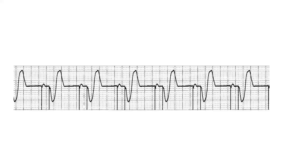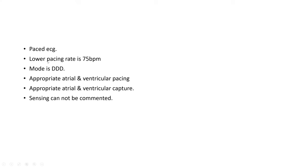This next ECG shows two pacing spikes. Importantly, the P is always there with the QRS — P with QRS, P with QRS — so it means this is a dual chamber pacemaker. The first spike is making the P and the second spike is making the QRS. How to write it: this is a paced ECG, the lower pacing rate is 75 beats per minute, mode is DDD, there is appropriate atrial and ventricular pacing, appropriate atrial and ventricular capture, and sensing of both atrium and ventricle cannot be commented because there is no native P or QRS.